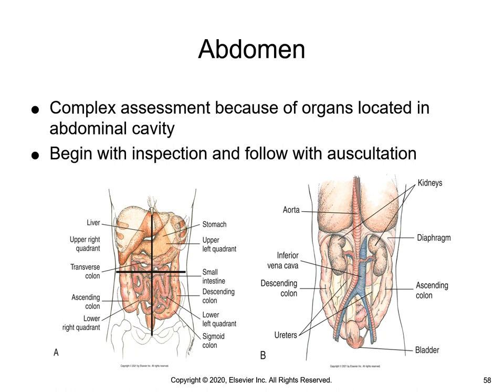The xiphoid process or the tip of the sternum is the upper boundary of the abdomen. The symphysis pubis is the lower boundary. When auscultating and inspecting the abdomen, it is divided into four quadrants at the midline, roughly the belly button. For an abdominal examination, we start with inspection, then auscultation. Palpation is always last because manipulation of the abdomen will alter both the frequency and character of the individual's bowel sounds.